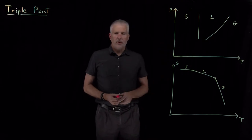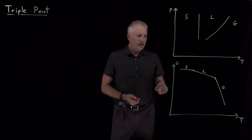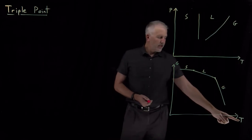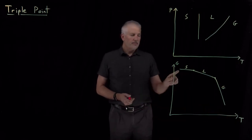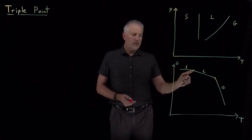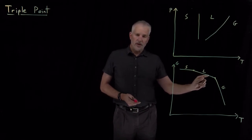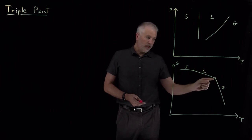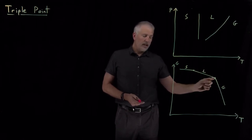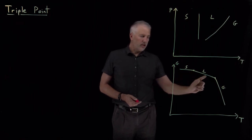Here's a recap of what we know about phase transitions so far. In particular, when we change the temperature of a substance, we can heat it from the solid phase. Its free energy will decrease slowly until it becomes equal to the value of the liquid phase. At that point, the liquid phase is lower because it's dropping faster. It will continue to drop until the gas free energy is lower than that of the liquid. So we go through solid to liquid to gas.